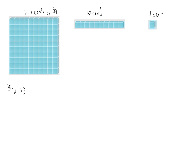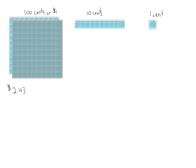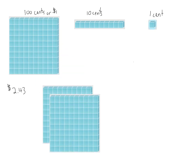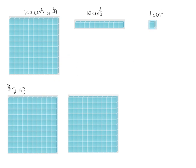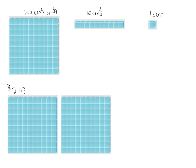So two dollars and forty-three cents. In order to do two dollars and forty-three cents, we need two of these one dollar blocks. So we'll just grab a couple of those. There's one and there's two. So there's my two dollars and I need forty-three cents, so I need forty cents.